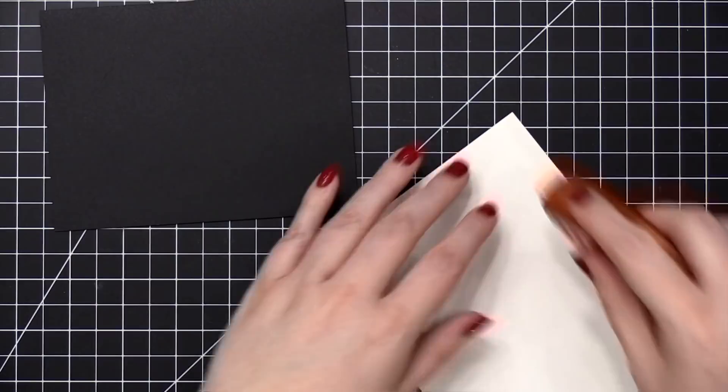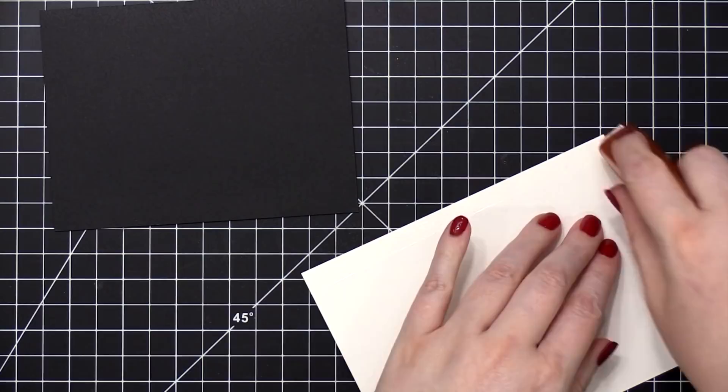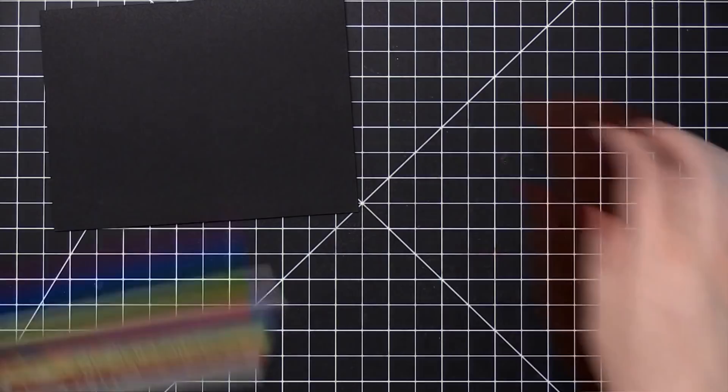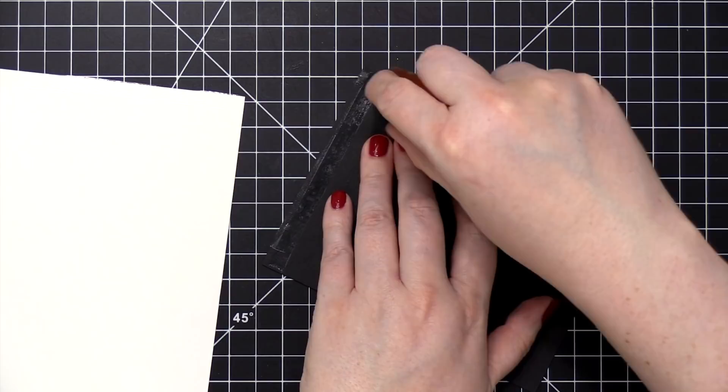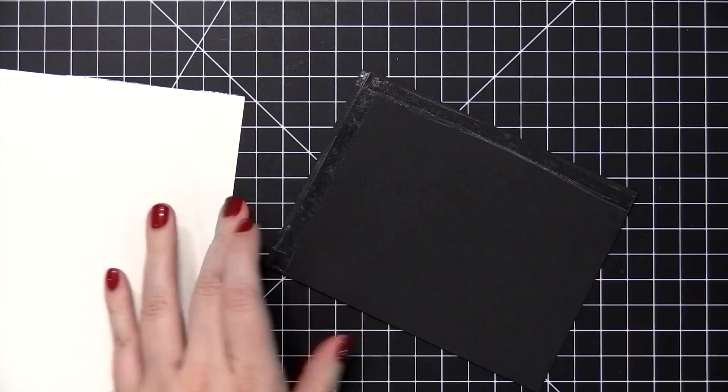So I'm adding adhesive to the edges that I just cut, which is the bottom and the right edge, using some Tombow Xtreme Adhesive. And then I'm going to come to the envelope, and I'm going to add adhesive to the left edge and the top, trying to get it as close to the edge of the envelope as possible. I'm also going to add some stripes of adhesive right through the center, kind of diagonally. This is going to make sure that it sticks to the center of the envelope.